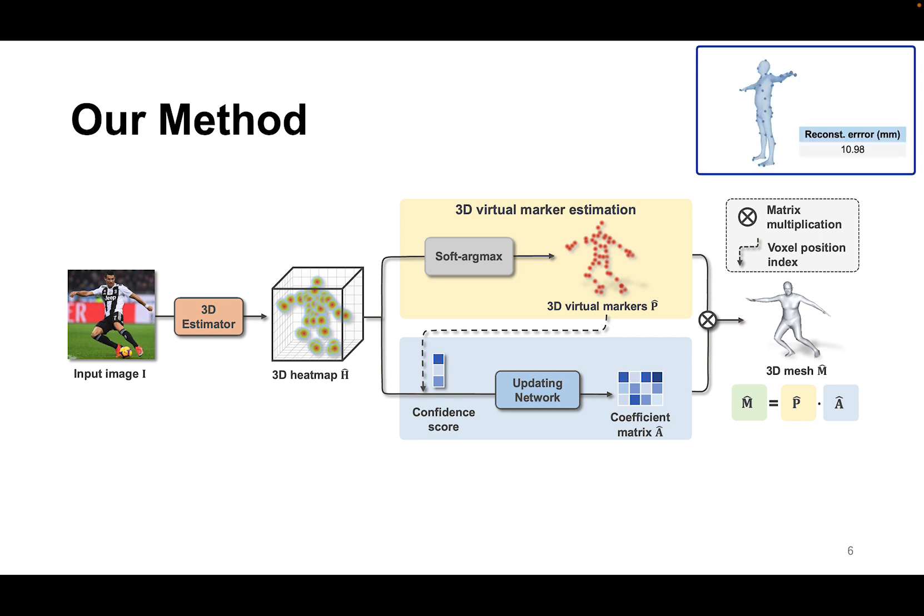Ideally, if we have accurate estimates for all virtual markers, then we can recover the complete mesh by simply multiplying them with a fixed coefficient matrix. However, in practice, some markers may have large estimation errors because they may be occluded in the monocular setting.